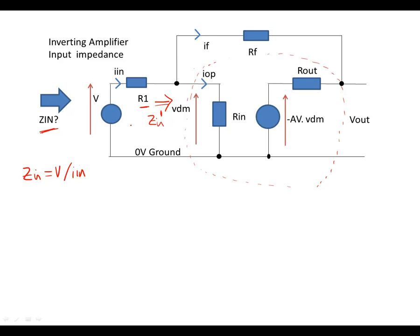If we now look at Kirchhoff's current law, we've got current flowing into this node of Iin, flowing out in terms of Iop, and flowing up here in terms of the feedback value.